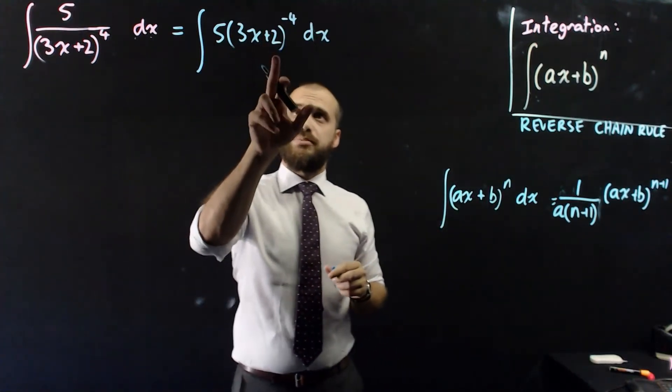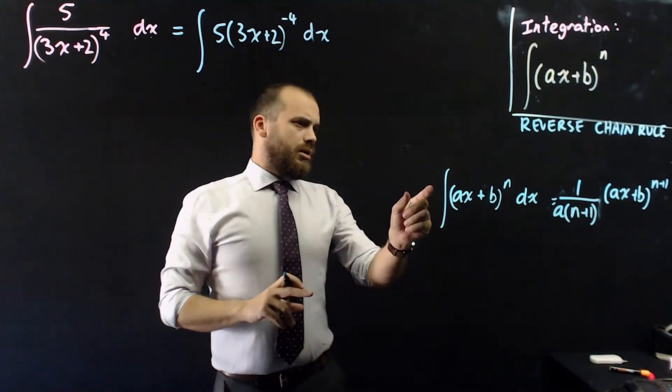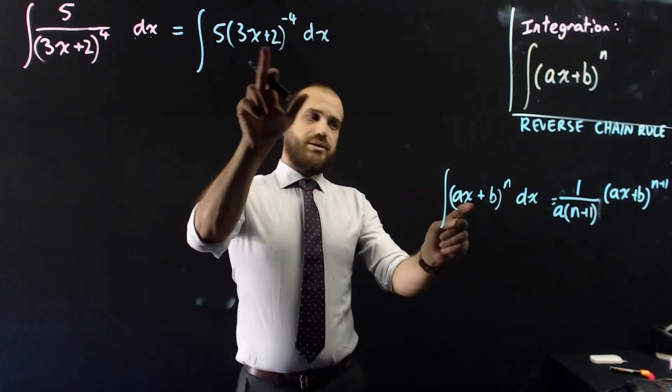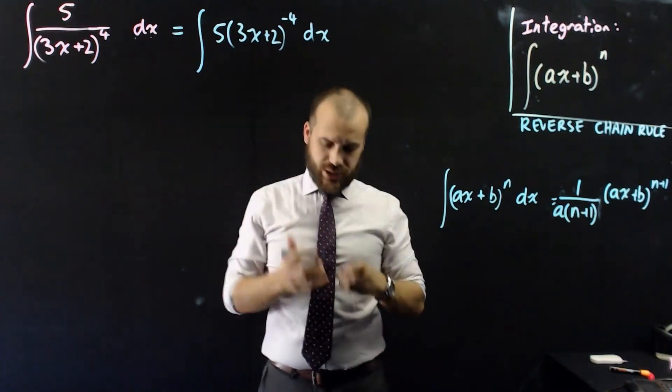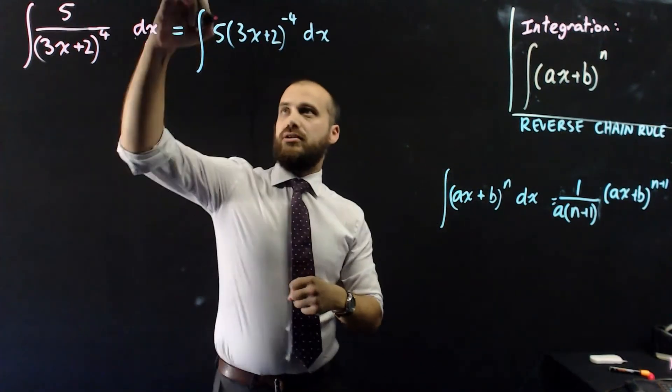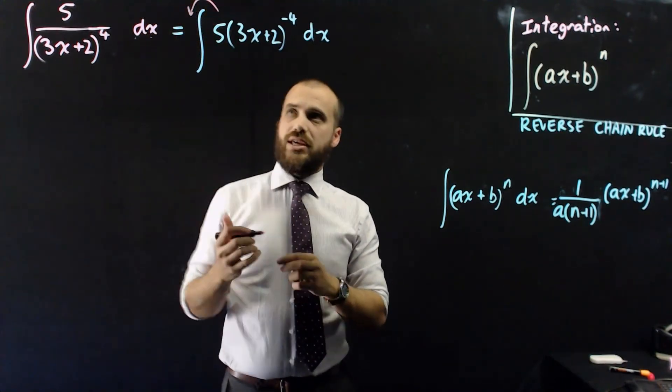This is 5 times ax plus b to the power of negative 4. My formula has an ax plus b to the n, but it doesn't have this guy here. But that's okay, because from our little bit of theory, you should know that we can move this over here like that.